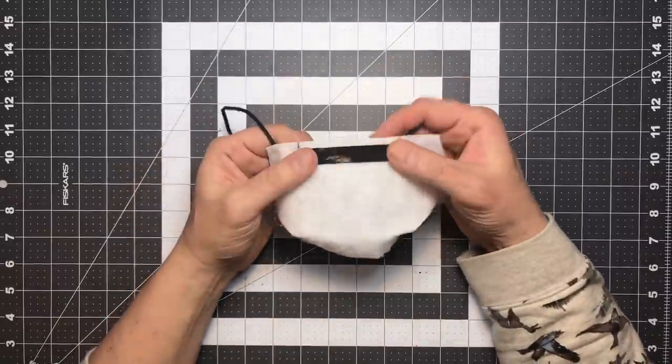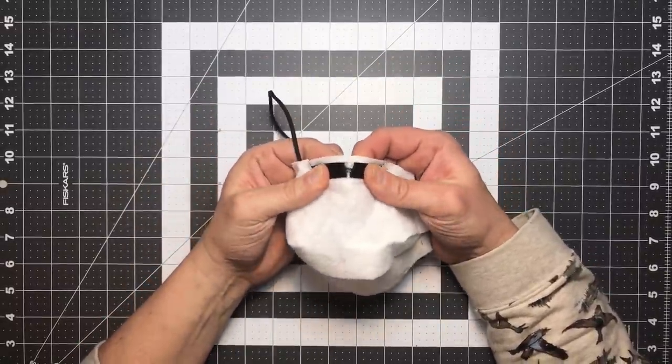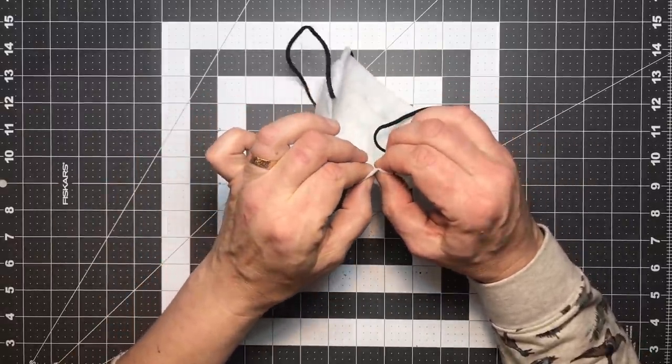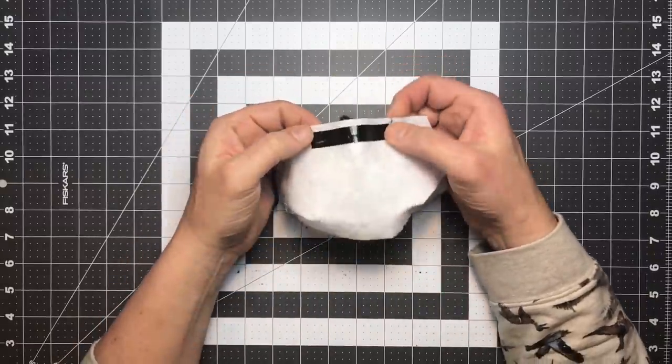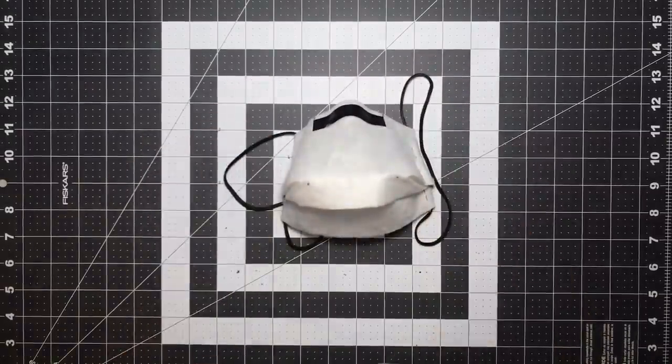Now the last step is to just bend this wire just in a soft curve here. And whoever ultimately wears it is probably going to need to adjust that a little bit and then I bend the ends up a little bit just so they don't jab your cheeks. And there you have it, there's your moo mask.